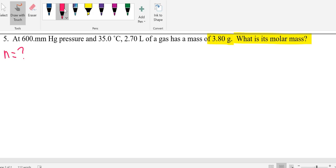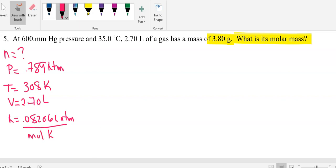N equals question mark. Our pressure, 600 millimeters divided by 760 millimeters per torr is going to give me 0.789 atmospheres. Our temperature is 35 plus 273, which is 308. Our volume is 2.70 liters. And our gas constant is still 0.08206 liter atmospheres per mole Kelvin.